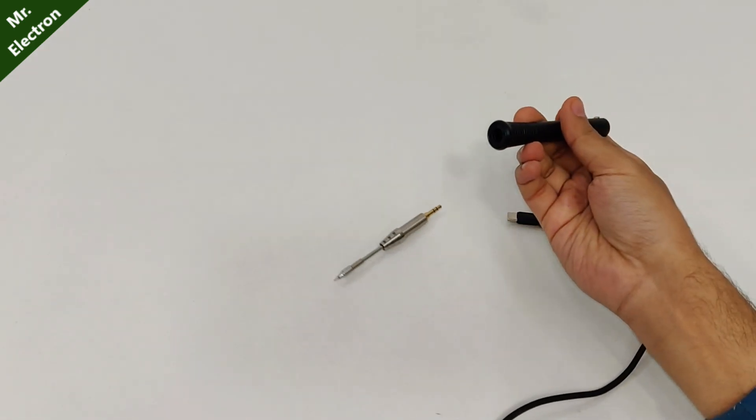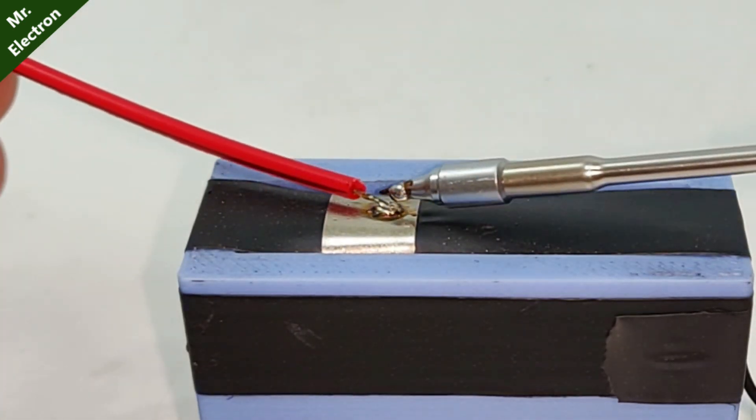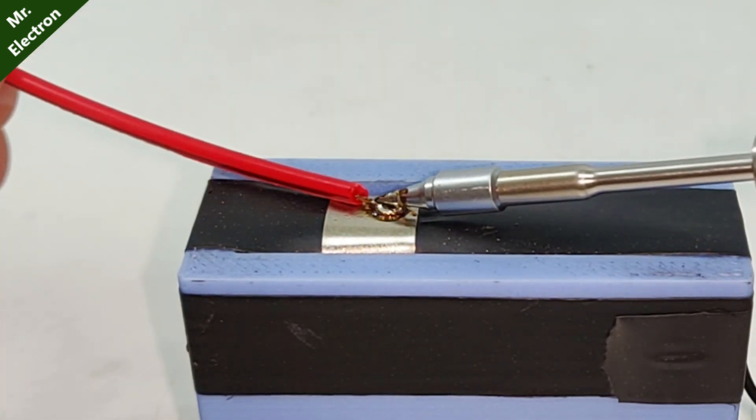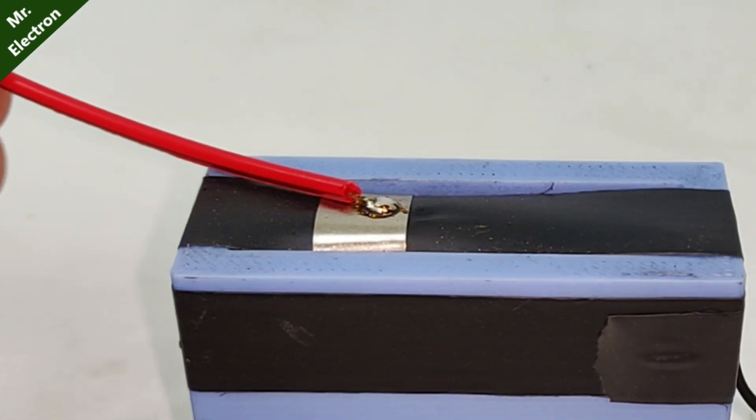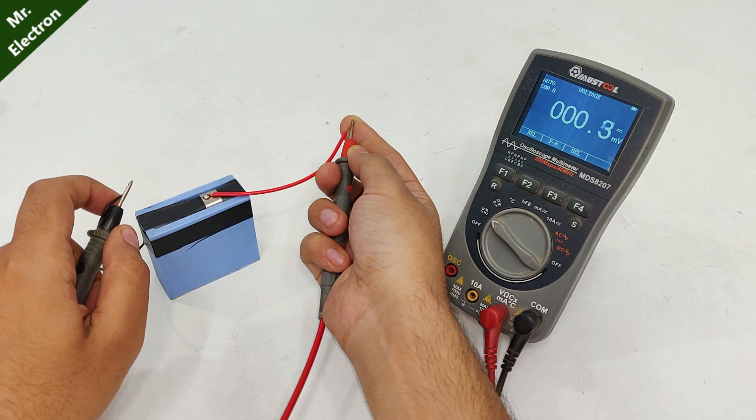Now place some solder to the nickel strip and connect a red wire to it. Now if we measure the voltage of this cell, we can see that it is zero volts because there is no electrolyte.